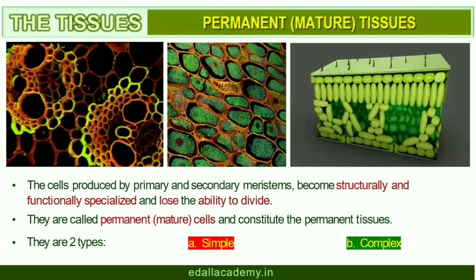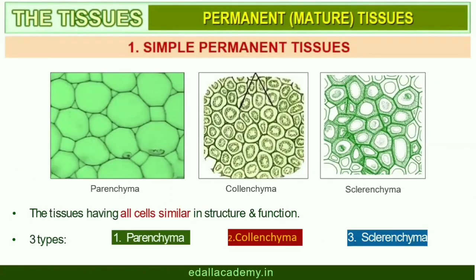Permanent Tissues. The cells of permanent tissues do not generally divide further. Permanent tissues having all cells similar in structure and function are called simple tissues. Permanent tissues having many different types of cells are called complex tissues. A simple tissue is made of only one type of cell. The various simple tissues in plants are parenchyma, collenchyma, and sclerenchyma.